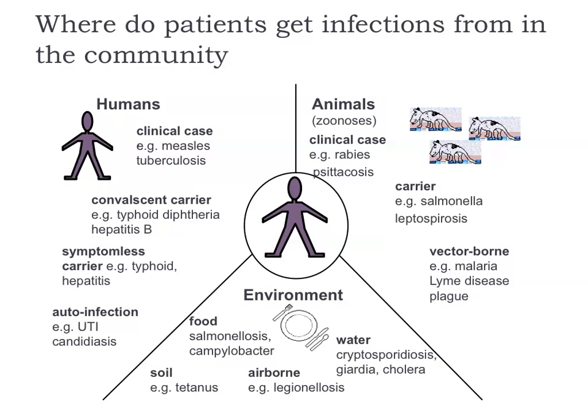Infections from animals are called zoonoses — a special term for infections of humans caught from animals. There's an added complication with vector-borne infections like malaria, where a mosquito bites and carries the infection from one person to another — more common in other parts of the world. From the environment there are all sorts of sources: soil, water, food, even the air. Legionnaire's disease, for example, travels on the air, particularly in hospitals and hotels with air conditioning.